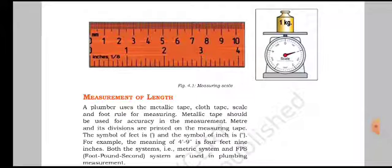The metallic tape should be used for accuracy in the measurement. So if we measure accurate measurement, then we have to use metallic tape. Meter and regions are printed on the measuring tape.